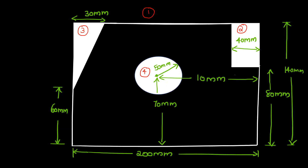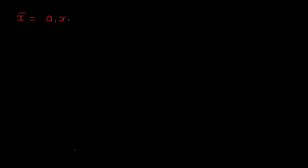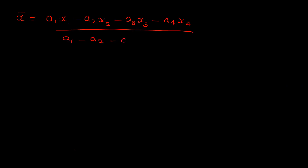The formula for x-bar is: x-bar equals A1·X1 minus A2·X2 minus A3·X3 minus A4·X4, divided by A1 minus A2 minus A3 minus A4.